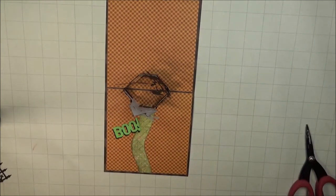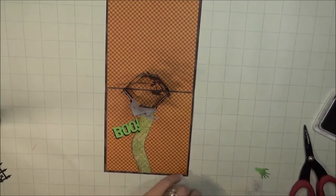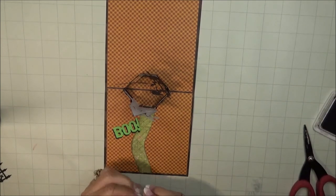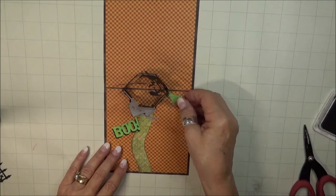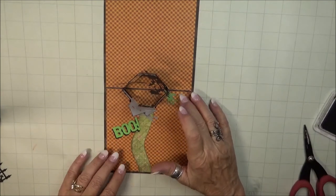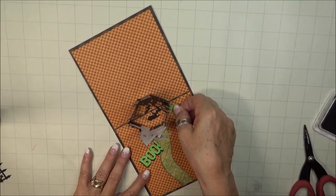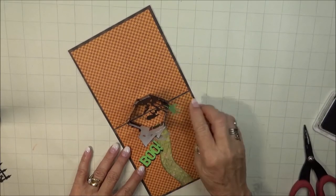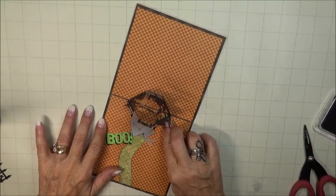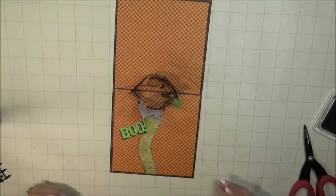The last thing for the inside of this card is the creepy little hand. I'm going to put a little bit of ink on it to make it appear dirty, and I'm going to see where I want him. That's looking pretty good. A little glue, put him in place, and the inside is officially finished.